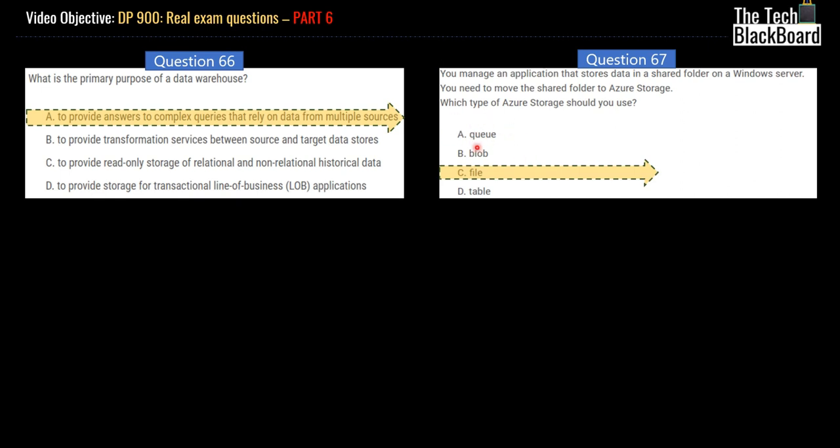Queue storage, queue is nothing but queue we normally use in messaging. Blob is more suitable for pictures or videos or audio files. Table is like key-value pair if we talk about Azure Table Storage. However, File is something that provides you capabilities of creating folders, creating files in it, and you know, mapping it to the Windows drive using SMB. So the correct answer for this one is File.